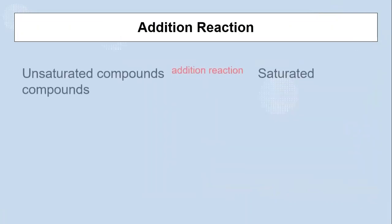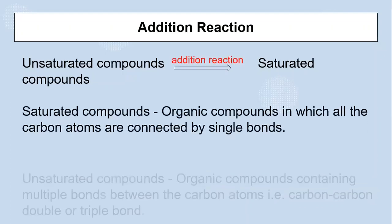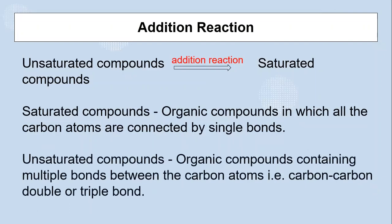Compounds having only single bonds throughout are called saturated compounds, and those having multiple bonds are unsaturated compounds. Hence, unsaturated compounds are converted into saturated ones by addition reaction. Using this logic, we can use addition reaction to detect the presence of double or triple bonds in any compound. A simple way to do this is by using bromine water or tincture iodine.